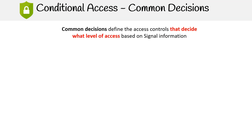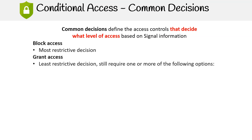Common decisions define the access controls that decide what level of access is granted based on signal information. Block access is the most restrictive decision. Grant access is the least restrictive decision, but may still require one or more of the following options.